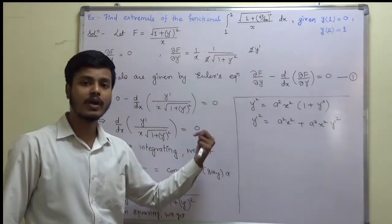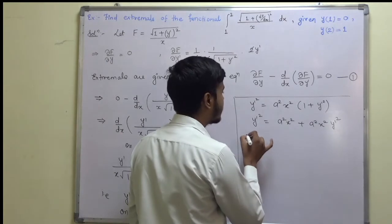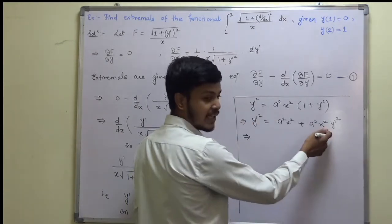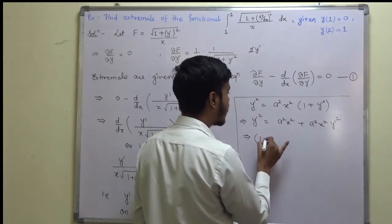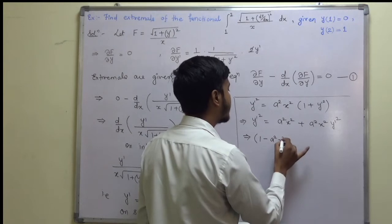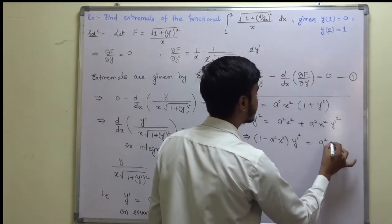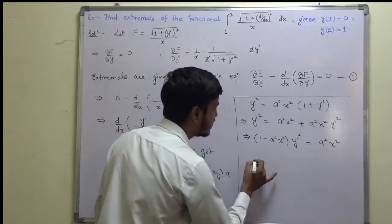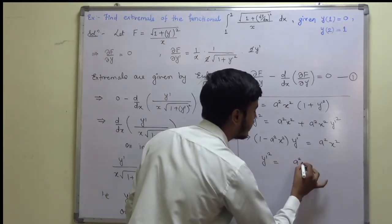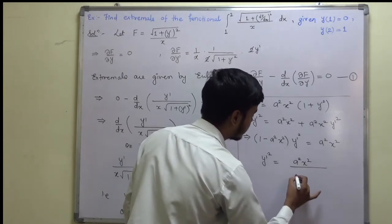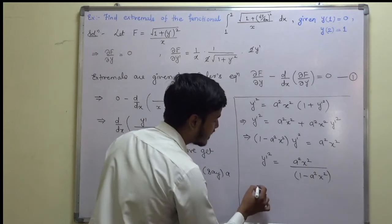Collecting y′² terms on one side: y′²(1 − a²x²) = a²x², so y′² = a²x² / (1 − a²x²). Taking the positive square root gives y′ = ax / √(1 − a²x²).